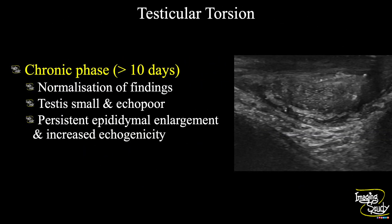In the chronic stage — more than ten days — you may get normalization of findings. The testis will gradually become smaller with decreased echogenicity. There might be persistent epididymal enlargement and increased echogenicity. The peritesticular flow may become normal again.